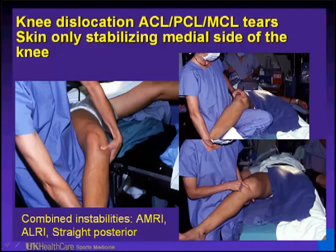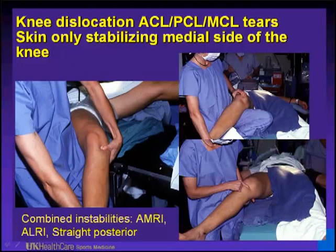Knee dislocations occur all too often on a Friday evening. These injuries often don't hurt. If you witness it — or a coach, trainer, or parent witnesses it — and it looks ugly and they have no pain, think the worst. This is a knee dislocation where the only thing remaining is the medial skin. The skin has sucked into the joint because the superficial and deep medial collateral ligament structures are injured. ACL and PCL are both injured, with combined instabilities on the medial side, though the posterolateral corner was okay.